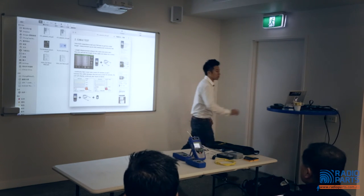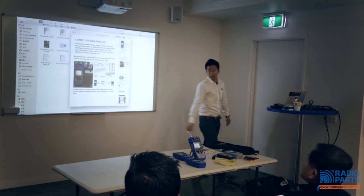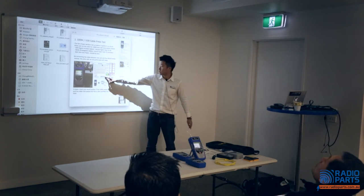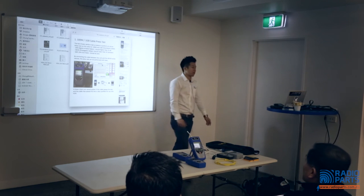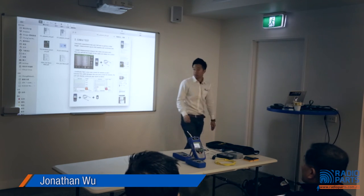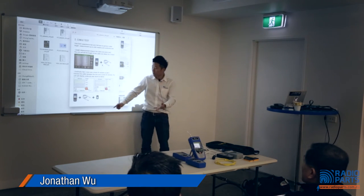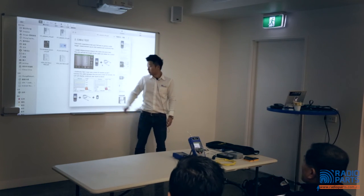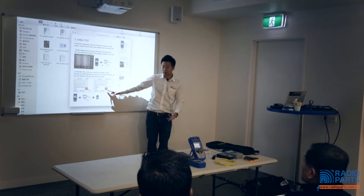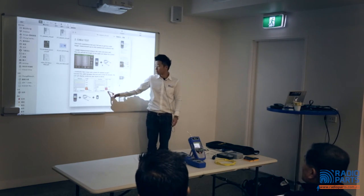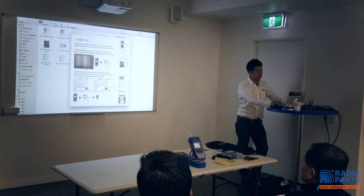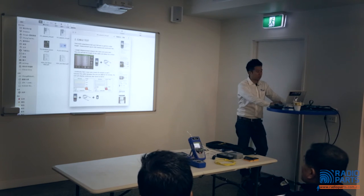When you run a speed certification test and it passes, you get a green check mark. When you run a basic cable test and it passes, you get an orange check mark. If the test fails you get a red check mark. That's the difference between the speed certification test and the basic cable test.